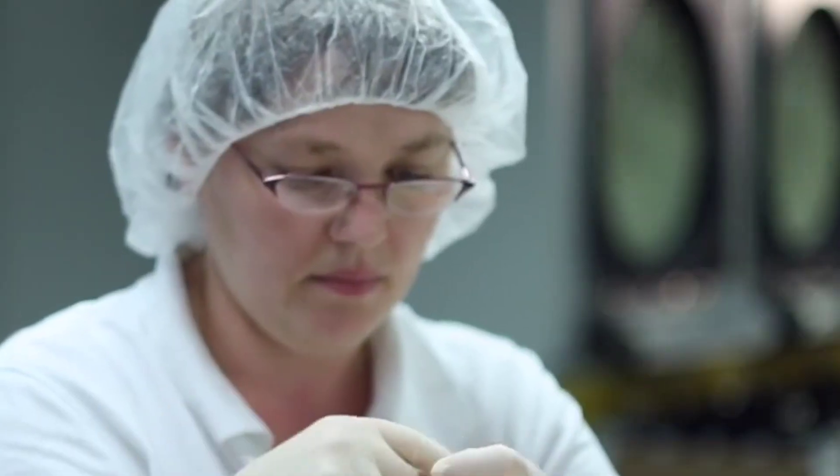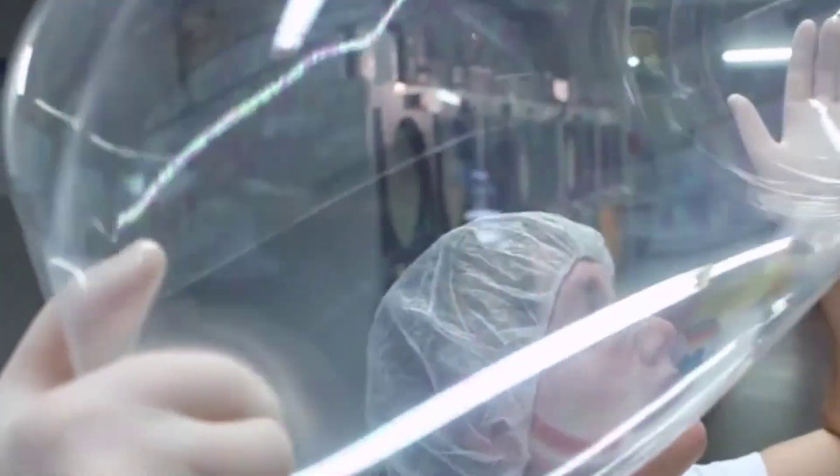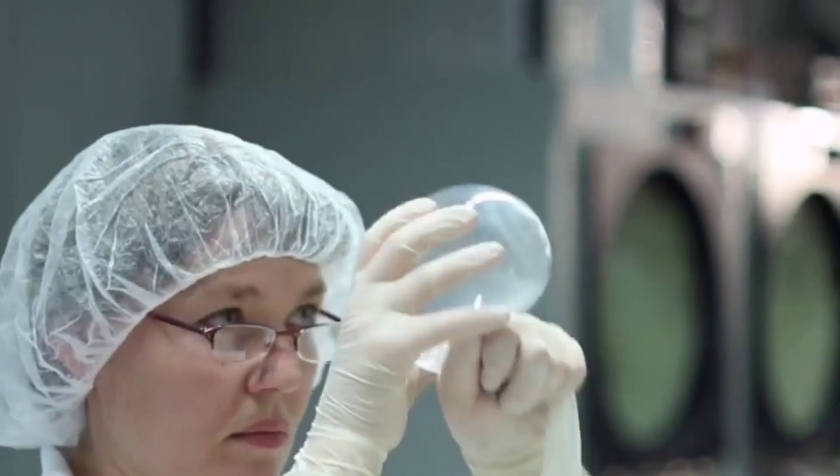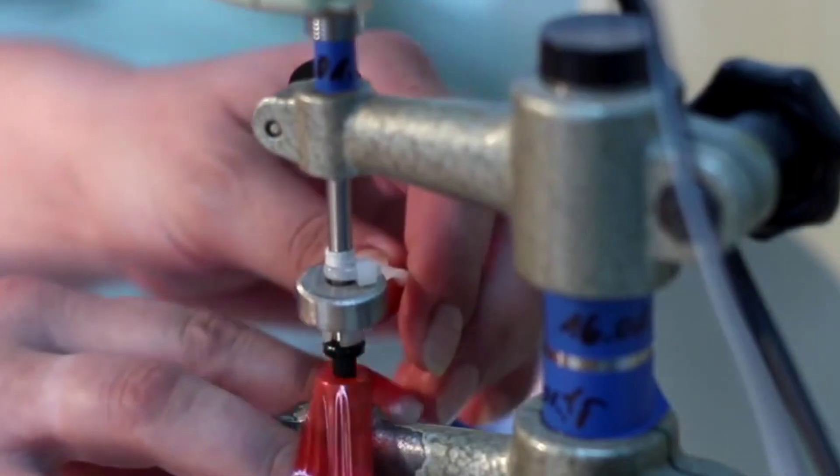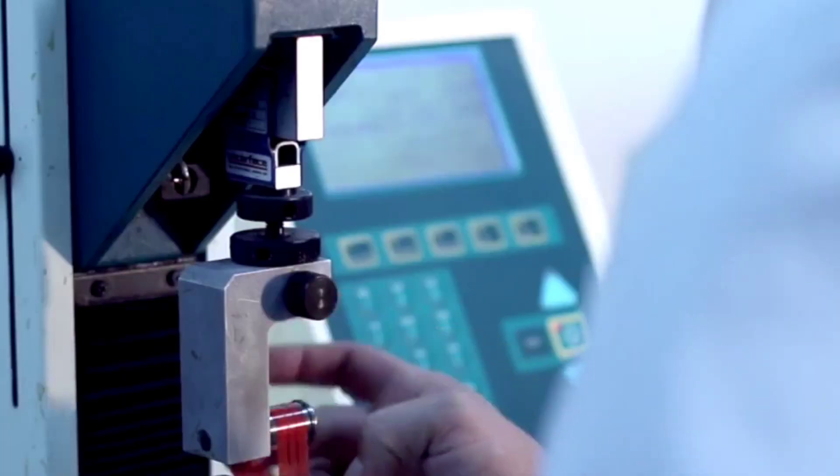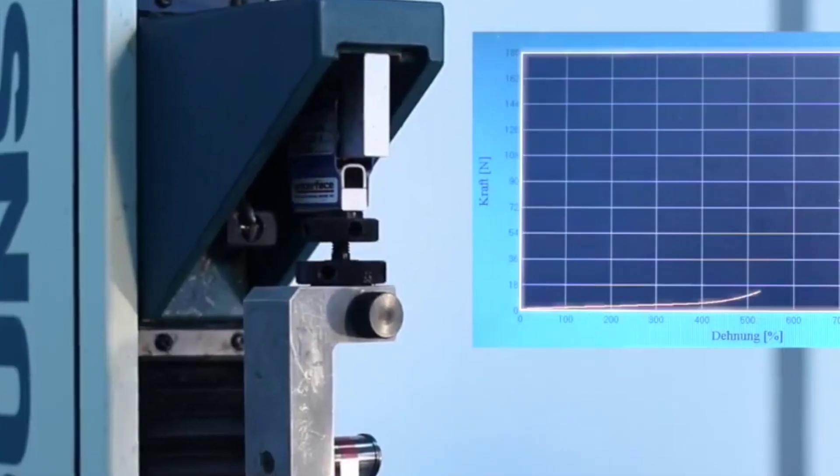The first such test is the inflation test, in which the condom is filled with air until it bursts. Condoms are required to stretch beyond 1.5 cubic feet, about the size of a watermelon, before bursting. This test is considered most important because the elasticity of the condoms keeps it from tearing during intercourse.